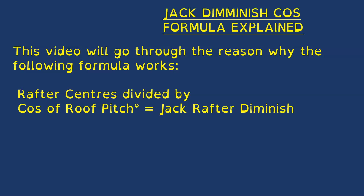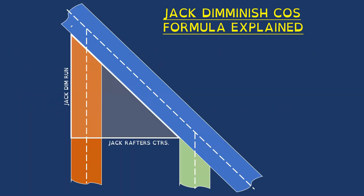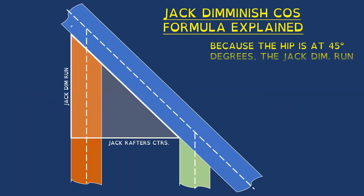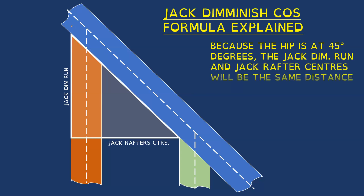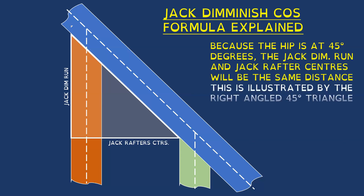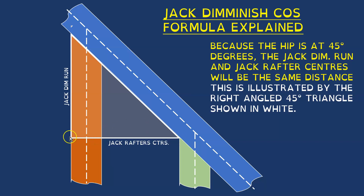I have a part plan diagram showing the hip or valley rafter with the jacks interacting with it. You'll see I've drawn in a right angle triangle in white. Your rafter centers would be from this broken line to this broken line, or from the left hand side of this jack to the left hand side of the next longest jack shown in orange.